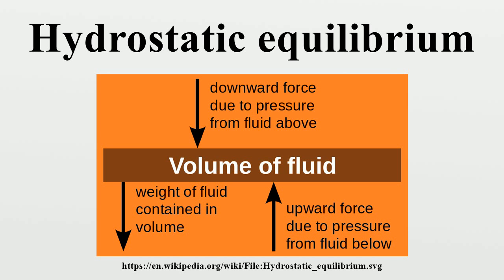For instance, the pressure gradient force prevents gravity from collapsing Earth's atmosphere into a thin, dense shell, whereas gravity prevents the pressure gradient force from diffusing the atmosphere into space. Hydrostatic equilibrium is the current distinguishing criterion between dwarf planets and small solar system bodies, and has other roles in astrophysics and planetary geology.